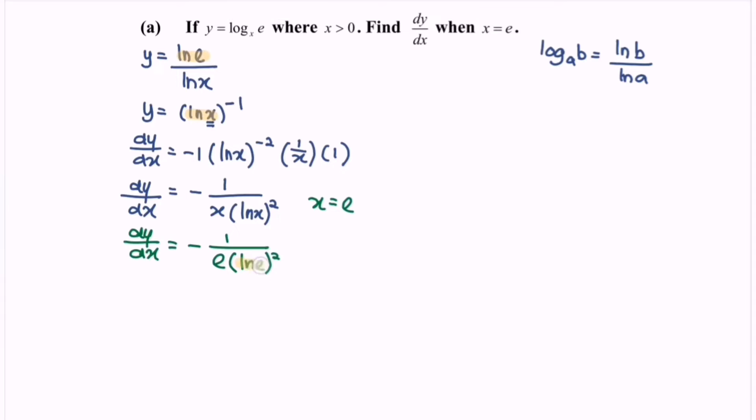As we know, ln e equals 1, and 1 squared equals 1. So finally, dy/dx equals negative 1 over e, or negative e to the power of negative 1.